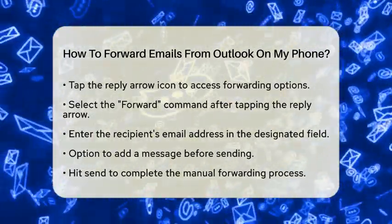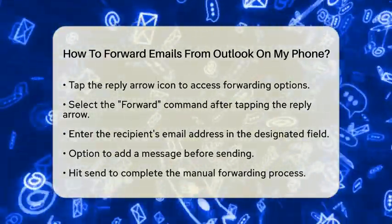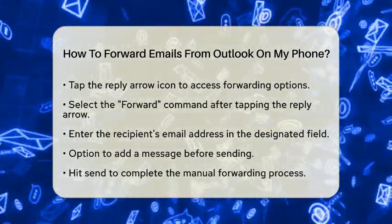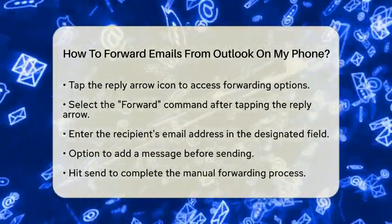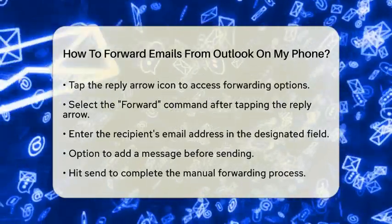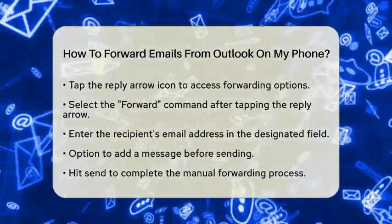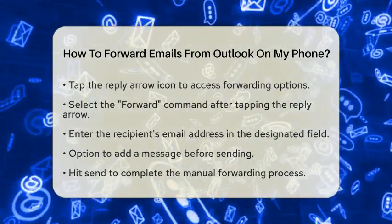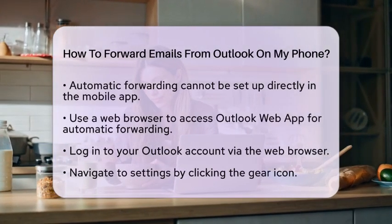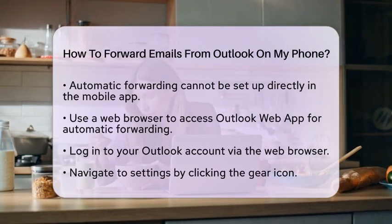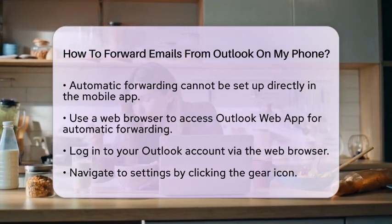If you are looking to set up automatic forwarding for all incoming emails, it is important to note that the Outlook mobile application does not support this feature directly. Instead, you will need to use a web browser on your phone or a computer. Open your preferred web browser and go to the Outlook web app by typing in the address outlook.office365.com or outlooklive.com.